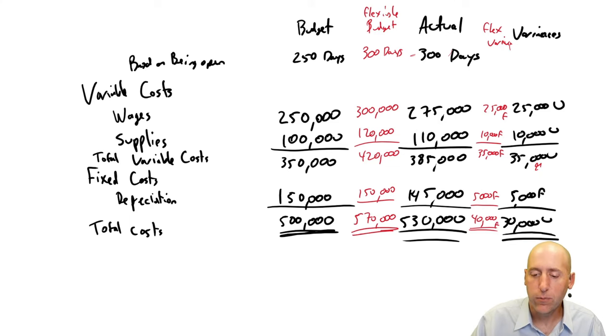So my friend armed with the knowledge of flexible budgets, I think they have a leg to stand on. I think if the boss is giving them a hard time about blowing the budget, I think they can say, look, we're open 50 more days. It should have cost us $50,000 more in wages and $20,000 more in supplies. I actually did a good job controlling costs. The flexible budget gives you that ammunition for that type of conversation.